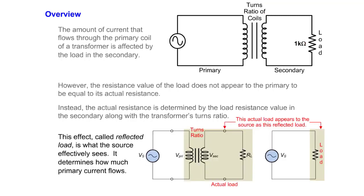This effect, called Reflected Load, is what the source effectively sees. It determines how much primary current flows.